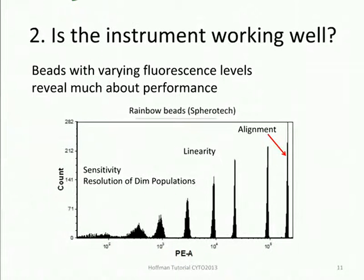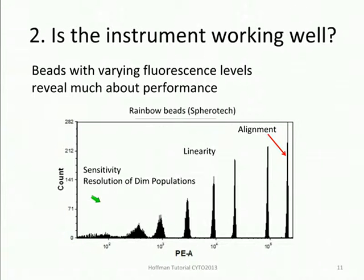A slightly more useful question is: is the instrument working well? This is where multi-intensity beads are useful. The very bright alignment bead with a narrow CV gives the information just described, but beads of different intensity also allow you to establish and quantify system linearity, as well as sensitivity — defined as your ability to resolve very dim populations of particles. Even visually, without quantitative analysis, you can get an idea that the instrument will be able to resolve dim populations.